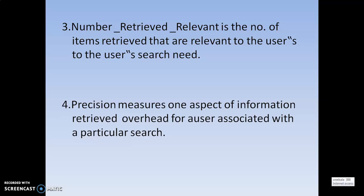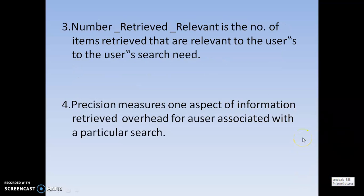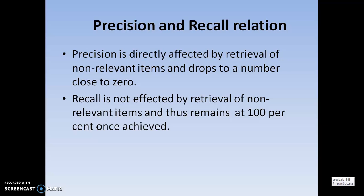Precision always looks for the topmost relevant items. Precision is directly affected by the retrieval of non-relevant items and drops close to zero. This is one of the overheads of precision — non-relevant items are made as zero, and only the topmost relevant items can be categorized as one in precision. It always focuses on exactly relevant items — that is the main overhead of precision.